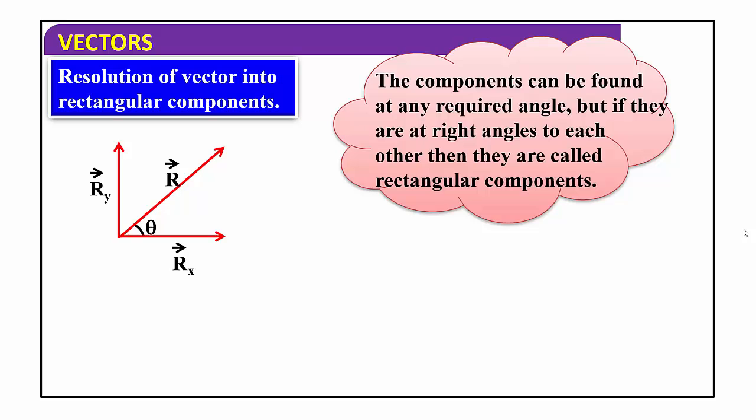Observe these two components — both are perpendicular to each other. The angle between Rx and Ry is 90 degrees. When these two components are perpendicular to each other, at right angles, having an angle of 90 degrees between them, we call them rectangular components. In a simple sentence: when a given vector is split into two components that are at right angles to each other, they are called rectangular components.